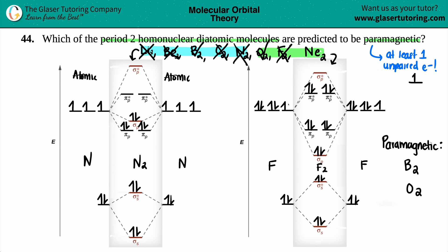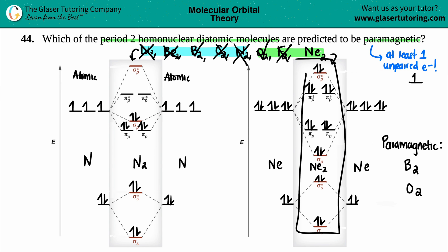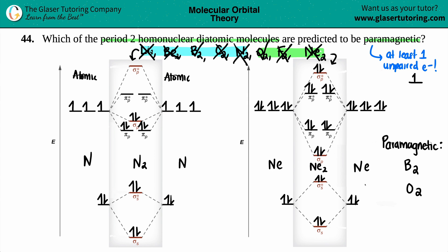Last one is neon, which has eight valence electrons. Eight plus eight is sixteen, so we add the final two electrons. All orbitals are completely filled with no unpaired electrons, so Ne₂ is diamagnetic. To summarize: only B₂ and O₂ are paramagnetic out of all the period 2 homonuclear diatomic molecules.